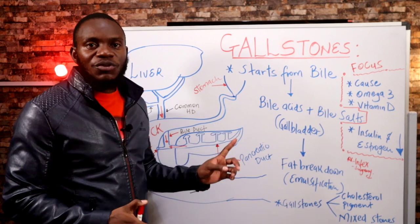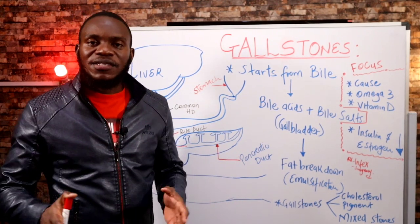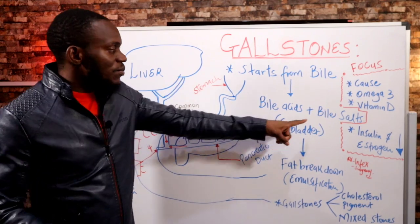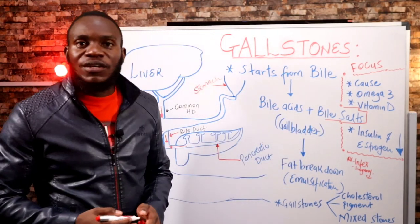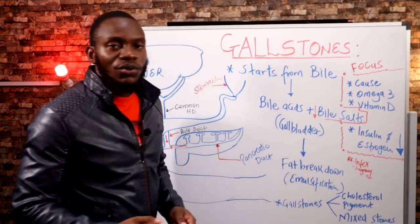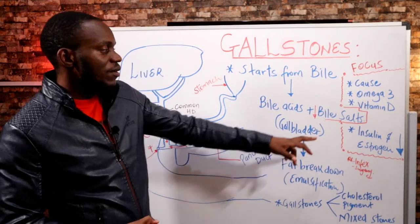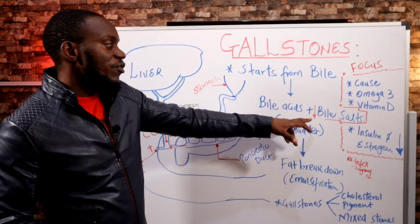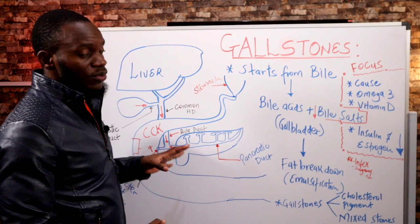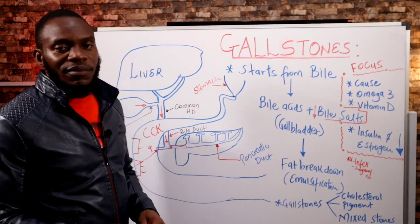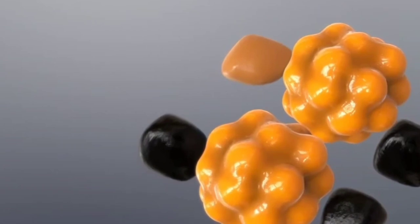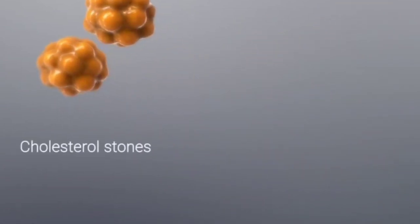Gallstones are components of cholesterol, but they do not come as a result of excess cholesterol in your system — they come as a result of crystallization of cholesterol particles. This is where bile salts come in: bile salts prevent cholesterol in bile from crystallizing. If you have a limited amount of bile salts, you're bound to have gallstones even with low cholesterol amounts. There are three general types of gallstones: cholesterol stones, where cholesterol in your bile crystallizes to form stones that occlude the ducts.